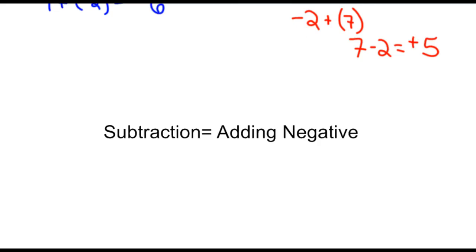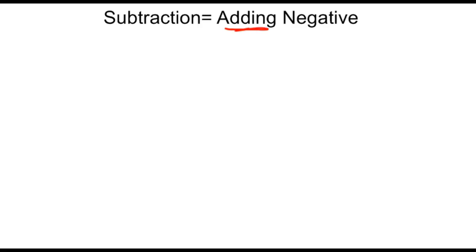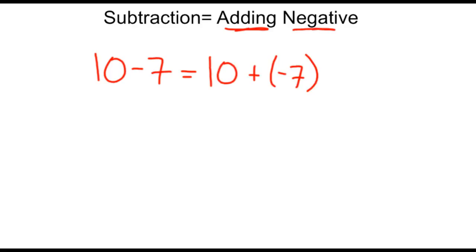Now, if we're thinking about subtraction, what you need to think about is that subtraction is really just adding the negative of a number. So if we wanted to do 10 minus 7, we can think of that as 10 plus a negative 7, and then we just follow our rules for working with signed numbers. Since the signs are different, we subtract the two numbers. 10 minus 7 is 3, and the 10 is the larger of the two numbers and it's positive, so our answer retains the sign of the larger number and we'd have a positive 3.